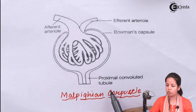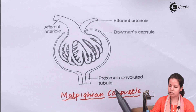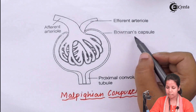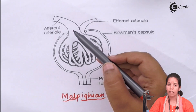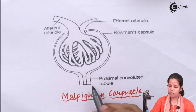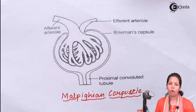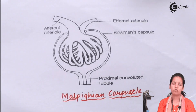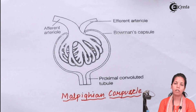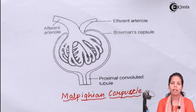Now students, this is the structure of Bowman's capsule or Malpighian corpuscles. It consists of the Bowman's capsular space along with two blood vessels — the afferent arteriole as well as the efferent arteriole — that carry blood. The proximal convoluted tubule is just attached beneath your Bowman's capsule. I hope we did study about Malpighian corpuscles or Bowman's capsule and you are all very clear with this concept. Thank you.